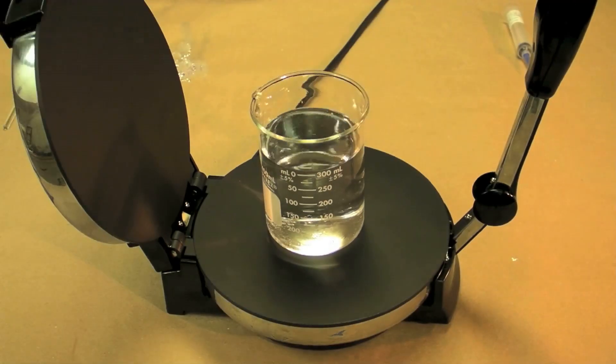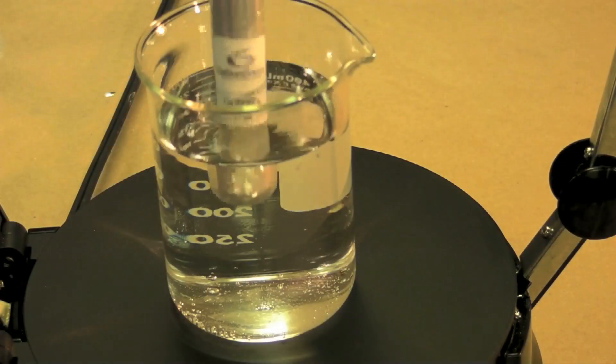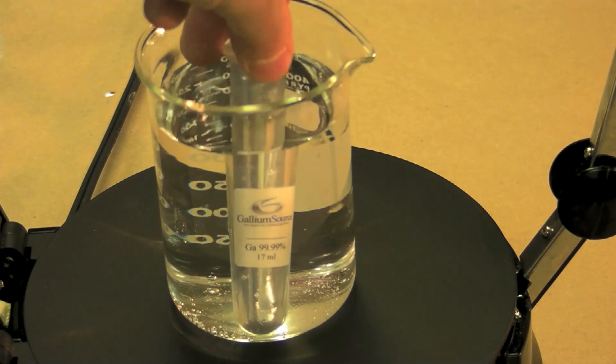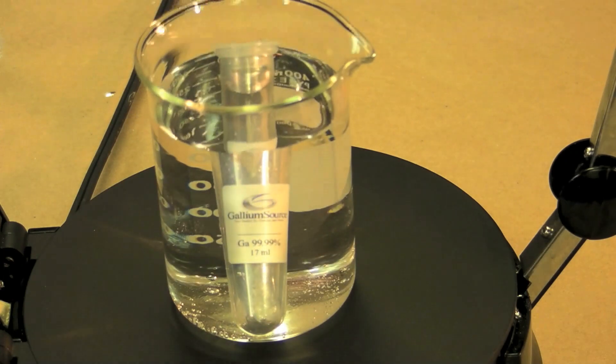Next, I heated water on a hot plate to 50 degrees Celsius and placed the gallium into the hot water until it melted.